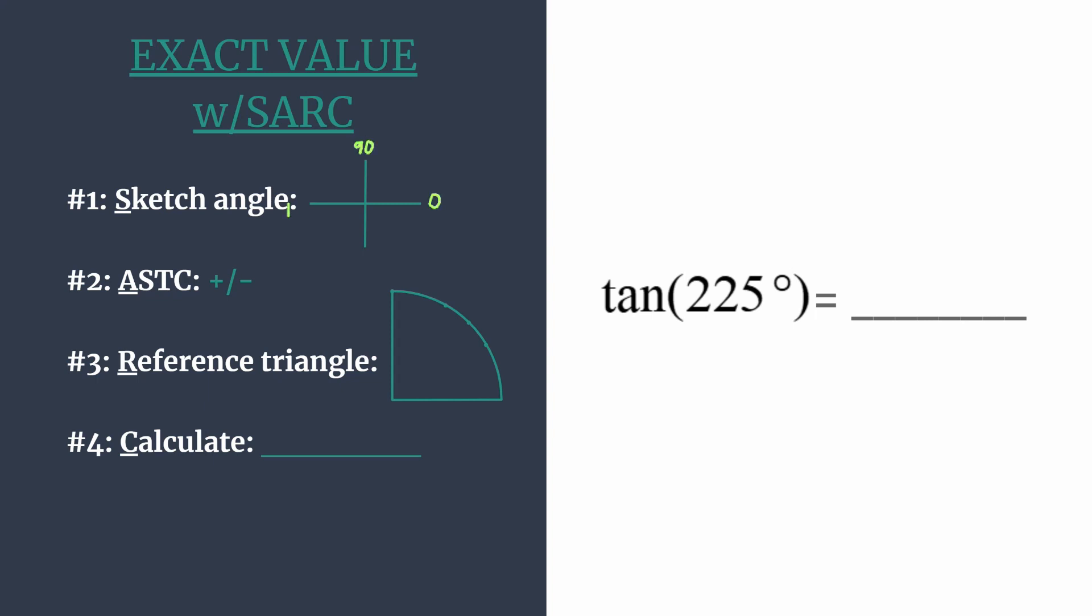180, 270. Alright we can stop here because we know 225 falls exactly halfway between 180 and 270, so here is a quick sketch of our terminal side.